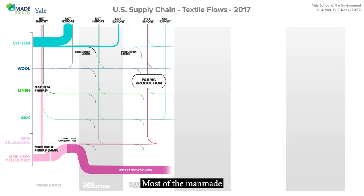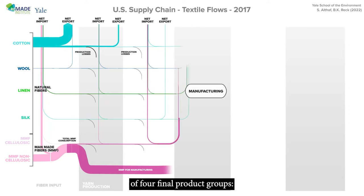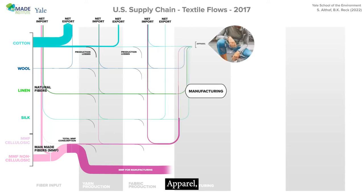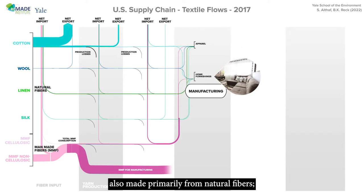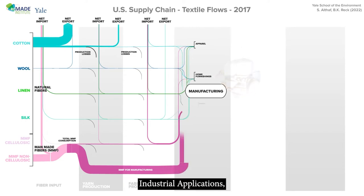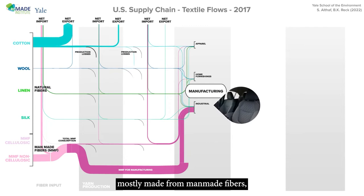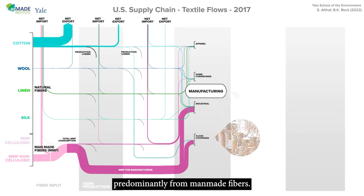Most of the man-made fibers are used directly in manufacturing. Manufacturing consists of four final product groups: apparel, with most of the clothing manufactured in the U.S. made from natural fibers; home furnishings, also made primarily from natural fibers; industrial applications, mostly made from man-made fibers; and floor coverings, also made predominantly from man-made fibers.